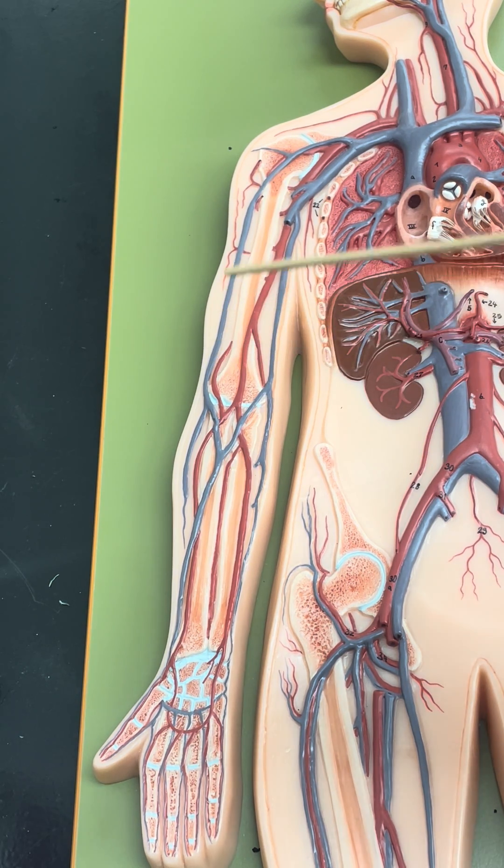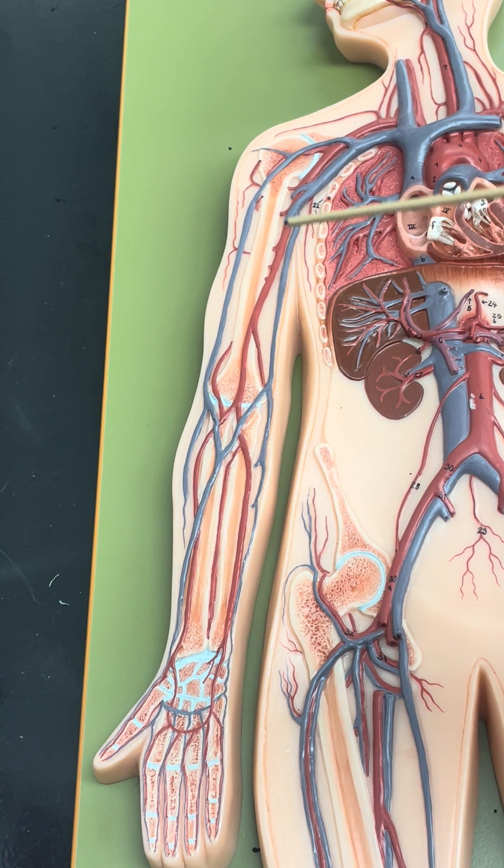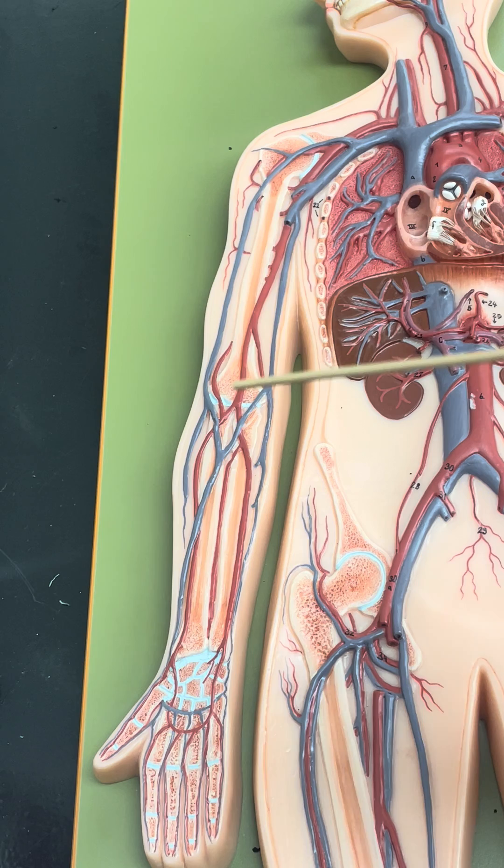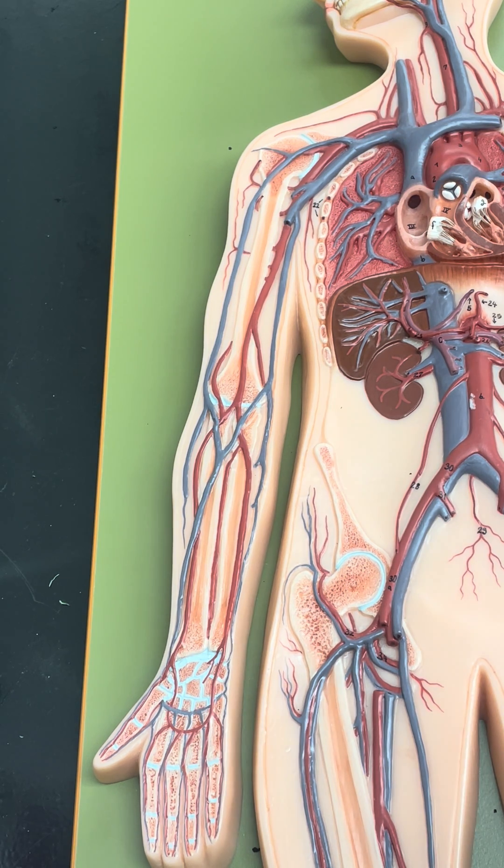In the upper arm, we can see the cephalic vein, the basilic vein, and the brachial vein, which is cut off. The brachial vein will then become the axillary vein. Then we have the subclavian vein, and here is the superior vena cava.